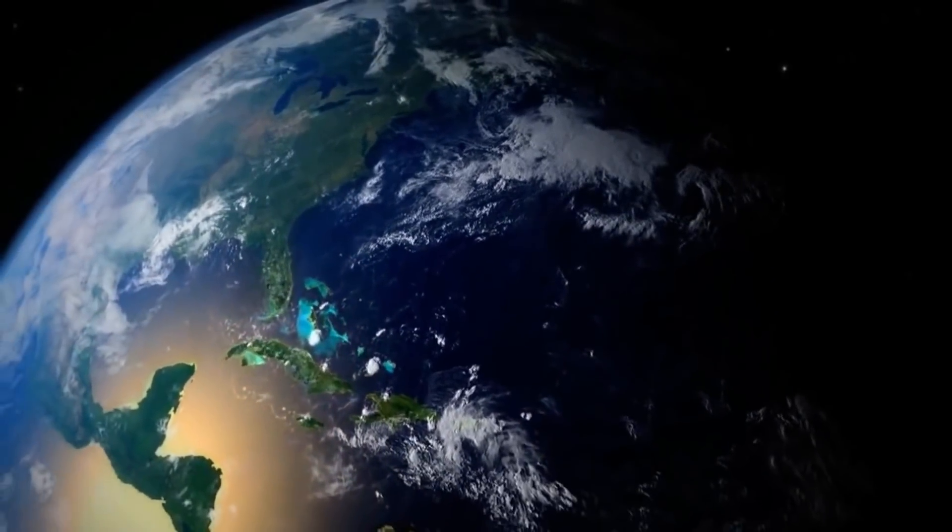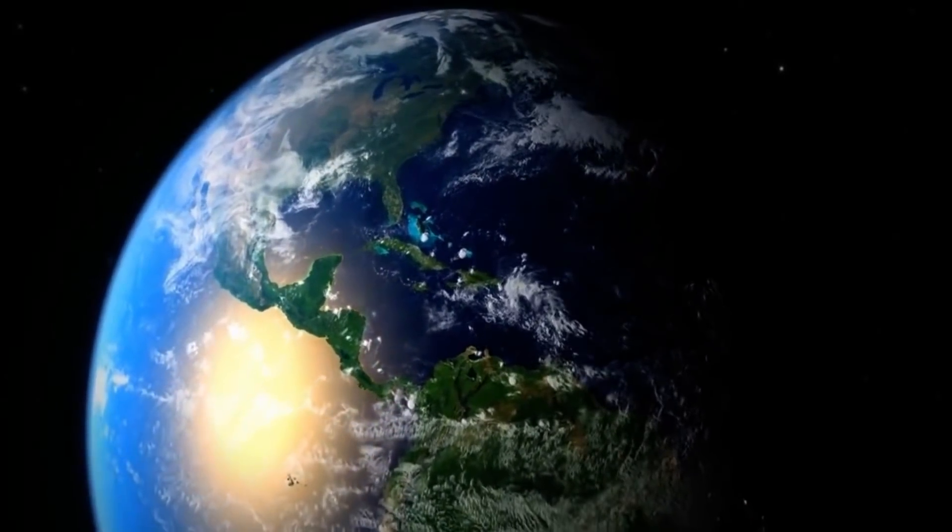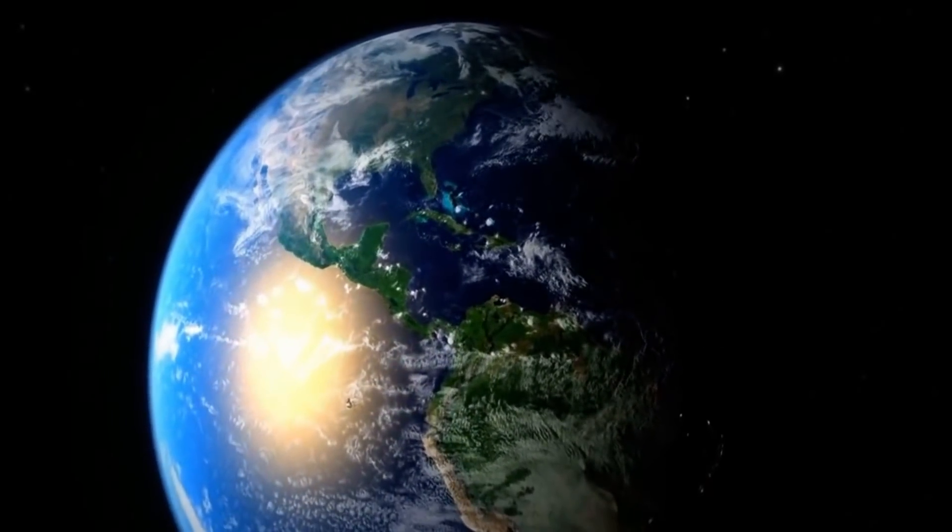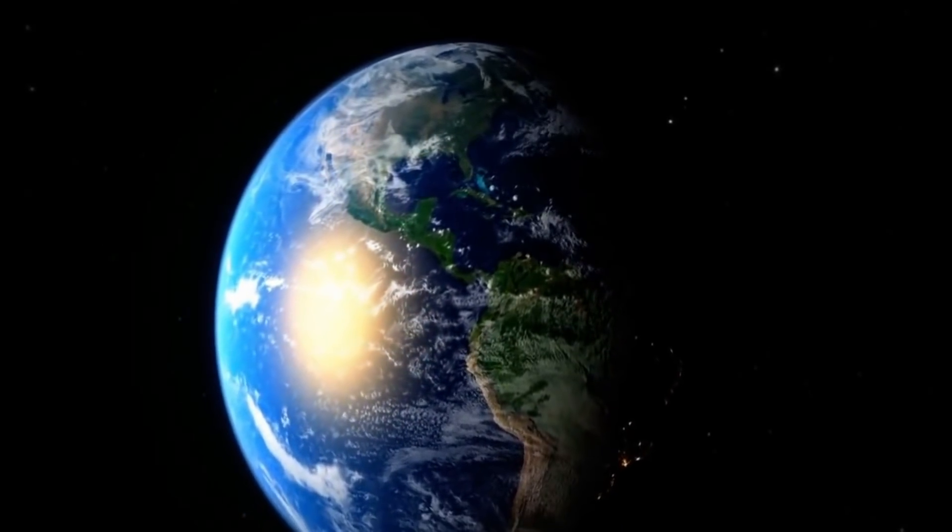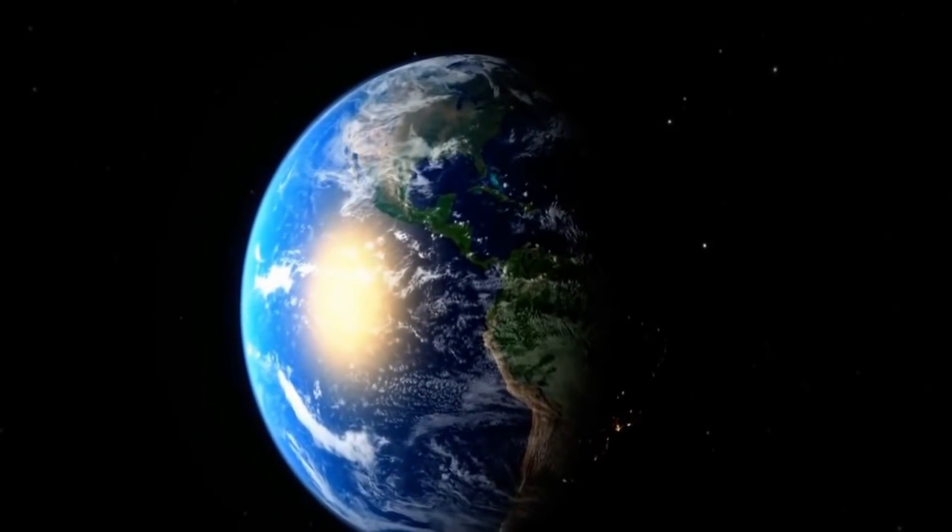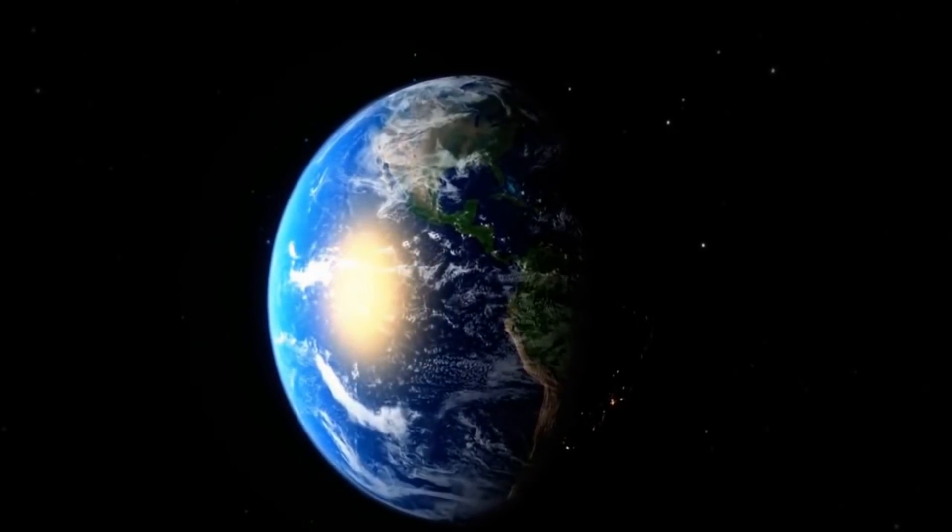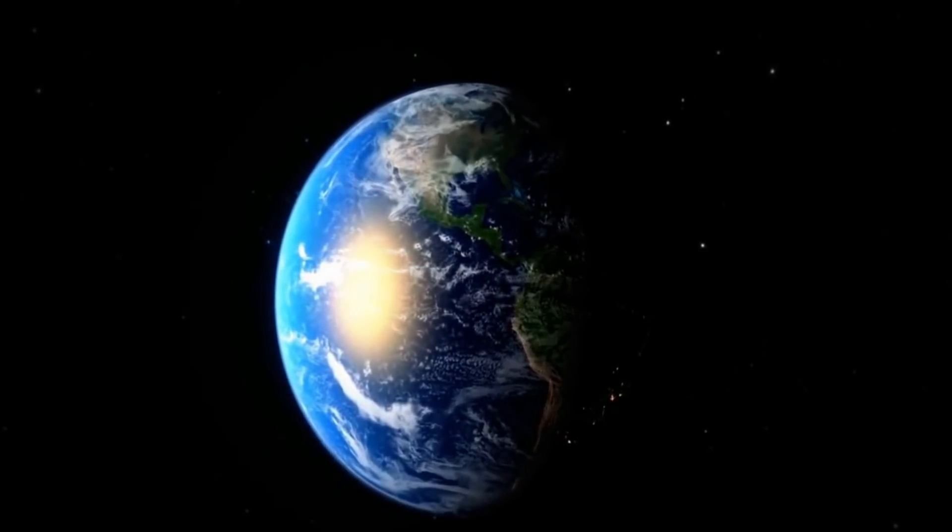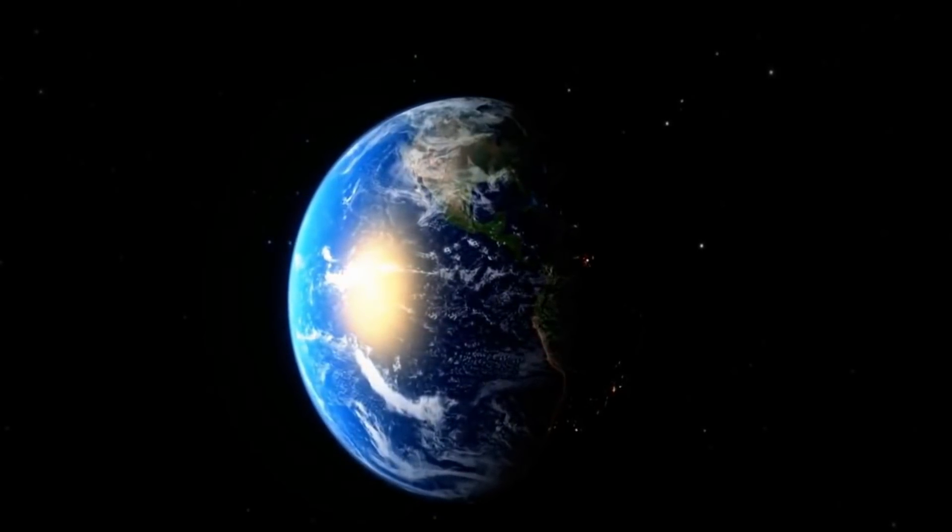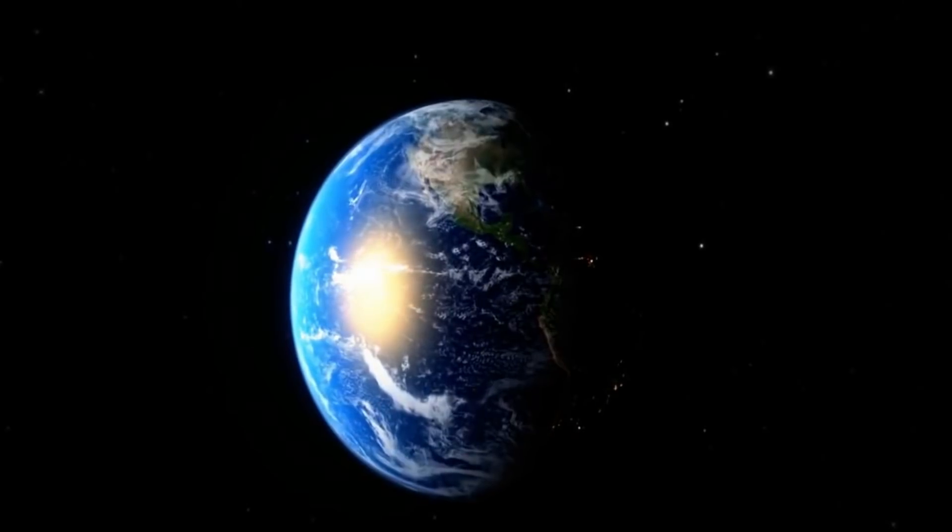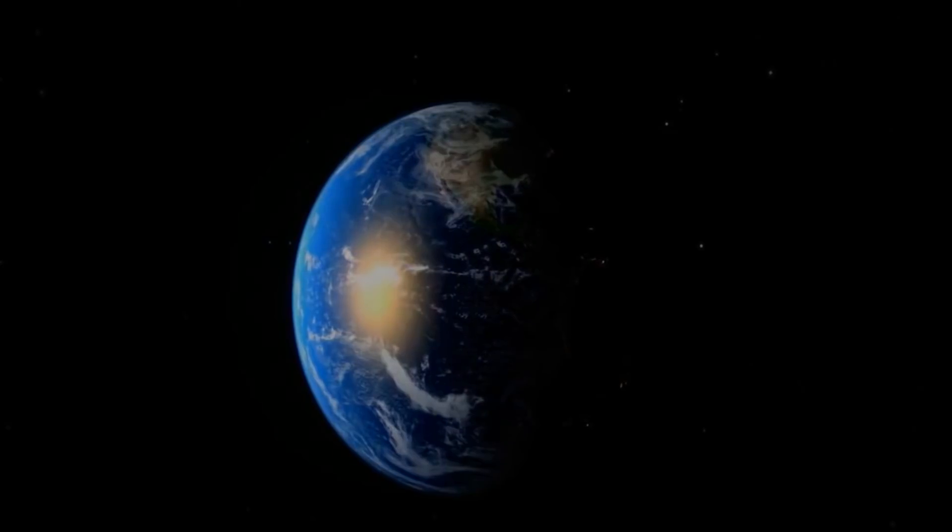However, the outermost layer, the exosphere, is the largest, extending from the exobase, located at the top of the thermosphere at an altitude of about 700 kilometers above sea level, to about 10,000 kilometers, 6,200 miles. The exosphere merges with the emptiness of outer space, where there is no atmosphere. The exosphere is mainly composed of extremely low densities of hydrogen, helium and several heavier molecules, including nitrogen, oxygen and carbon dioxide. The atoms and molecules are so far apart that the exosphere no longer behaves like a gas, and the particles constantly escape into space. These free-moving particles follow ballistic trajectory.